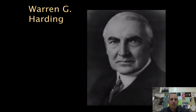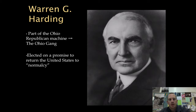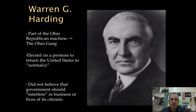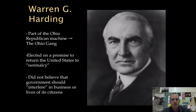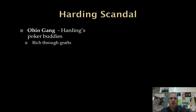Warren G. Harding was part of the Ohio Republican machine — the Ohio gang — a very corrupt group of individuals. He was elected on the promise of returning the United States to normalcy after the war, wanting to return to pre-war tendencies. He didn't believe that government should interfere in business or in the lives of citizens, similar to deregulation, allowing businesses to basically do what they want. The Ohio gang was Harding's poker-playing, drinking, and smoking buddies, and they became very rich through graft — overcharging citizens for government projects and collecting kickbacks.